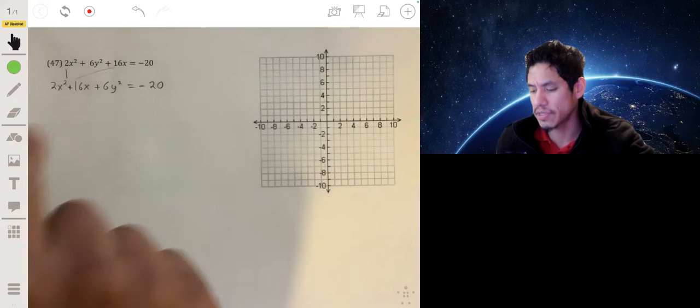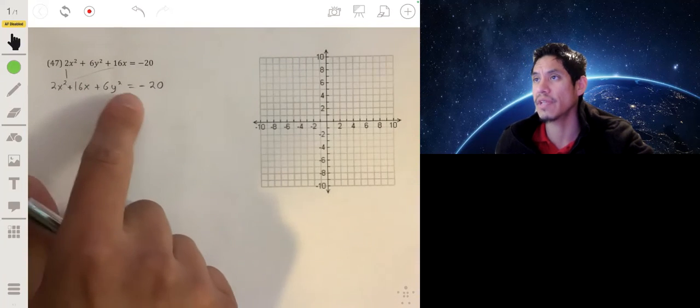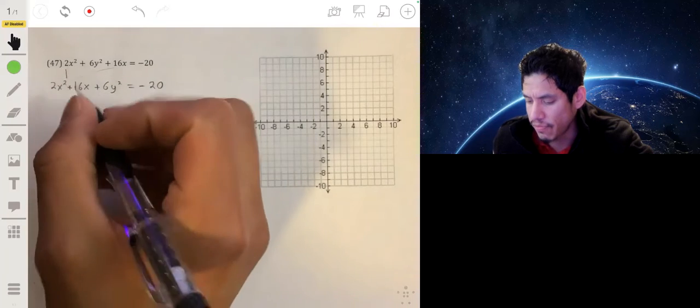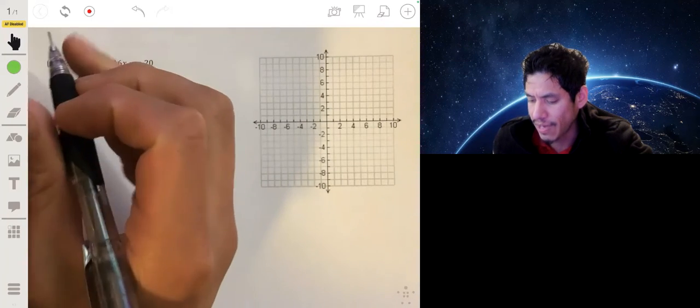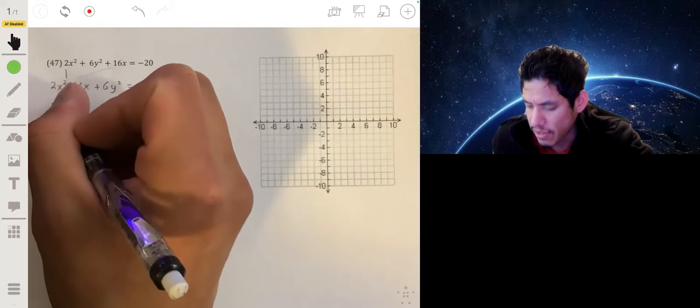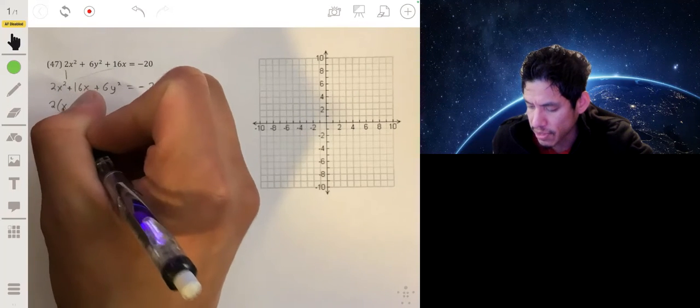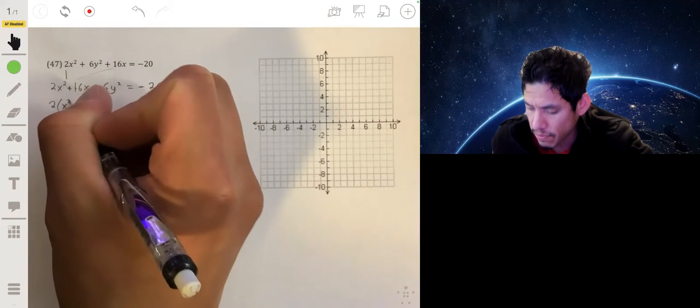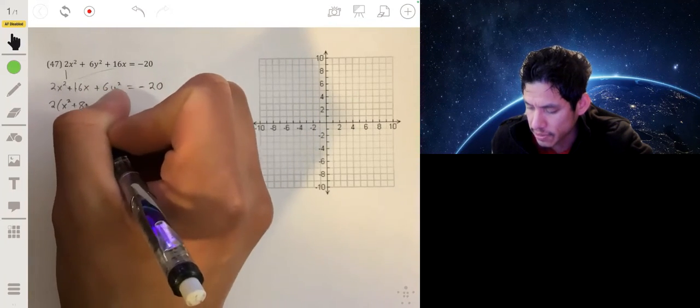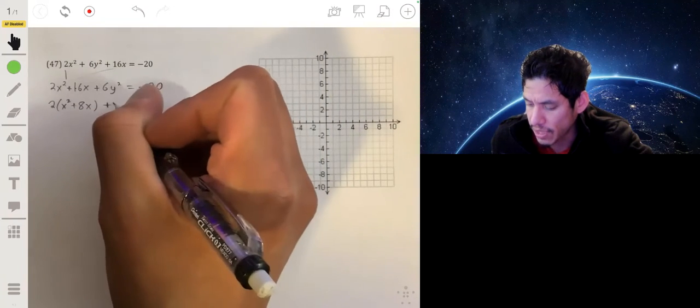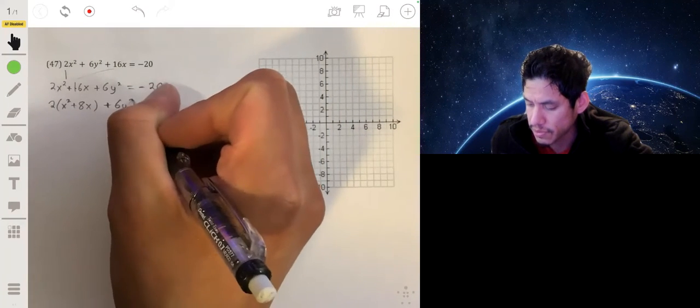And then you're going to complete the square for the x variables and then for the y variables. Now before you complete the square for x, I recommend factoring out that 2, so you get 2 times x squared plus 8x. There's nothing to factor out for the y terms, so we'll leave it as plus 6y squared is equal to negative 20.